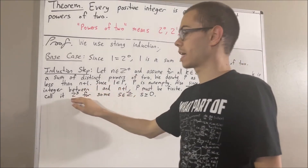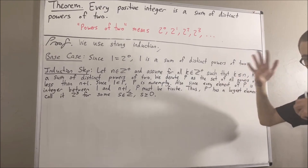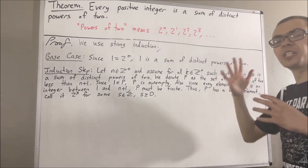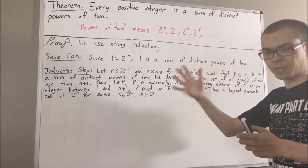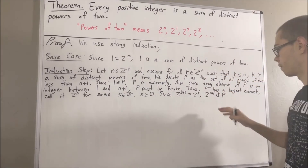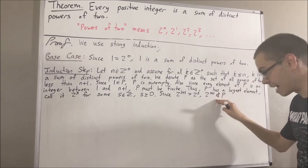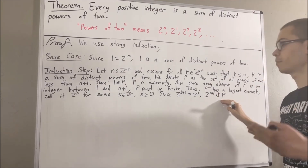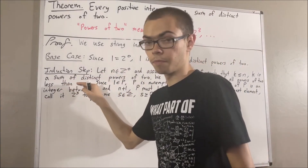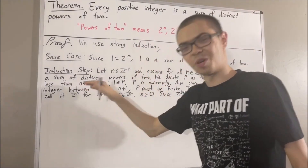Now, since two to the s is the largest element of p, and two to the s plus one is larger than two to the s, it could not be the case that two to the s plus one is an element of p. We know that two to the s plus one is a power of two, but since it is not an element of p, it cannot be less than n plus one. We must instead have that two to the s plus one is greater than or equal to n plus one.